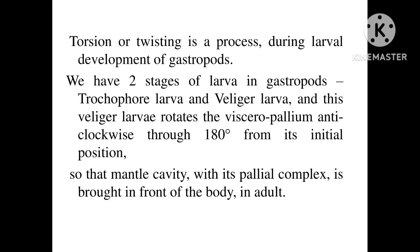Torsion in mollusks is a process during larval development. Gastropods have two larval stages — the trochophore larva and the veliger larva. During larval development, gastropods rotate the visceropallium anti-clockwise through 180 degrees from its initial position. As a result, the mantle cavity with its pallial complex is brought to the front of the body in the adult. This process of torsion takes place during larval development.